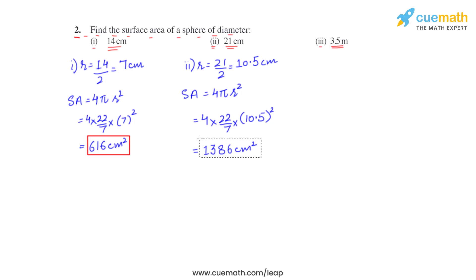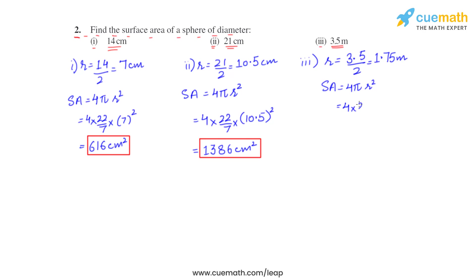This comes out to be 1386 square centimeters, so the surface area of this sphere is 1386 square centimeters. For the third part, we follow the same steps. The radius will be 3.5 by 2, which equals 1.75 meters. The surface area is 4 pi r squared, so 4 into 22 by 7 into 1.75 squared, which equals 38.5 square meters.